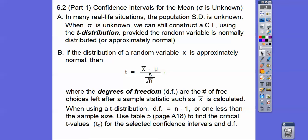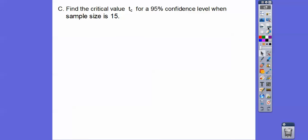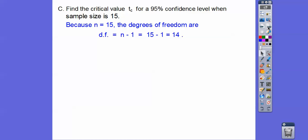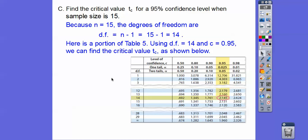To find your critical t-value, t sub c, for the selected confidence interval and degrees of freedom — for example, find the critical value for a 95% confidence interval when the sample size is 15. The degrees of freedom is 14, that's n minus 1. Looking at table 5, the t-score table, we go down to degrees of freedom 14 and scroll over to the 95% confidence level. The t-score is 2.145.